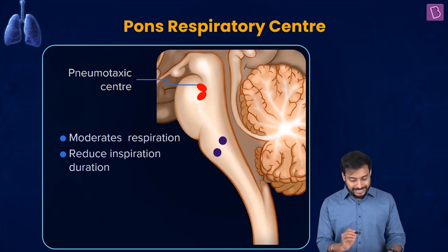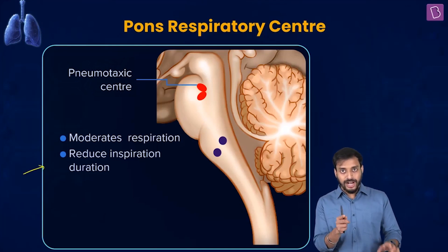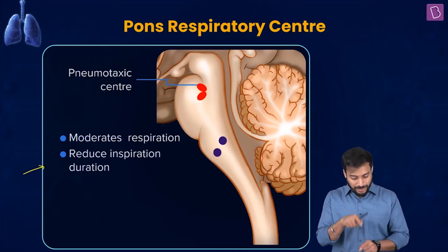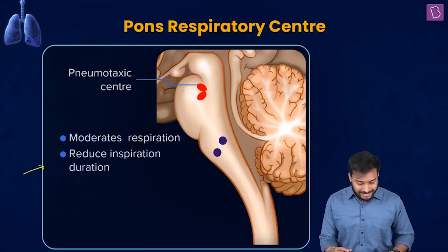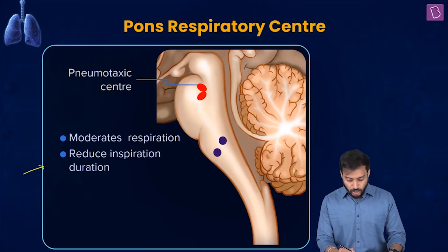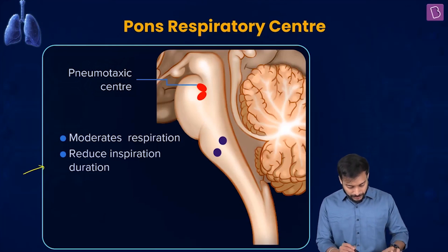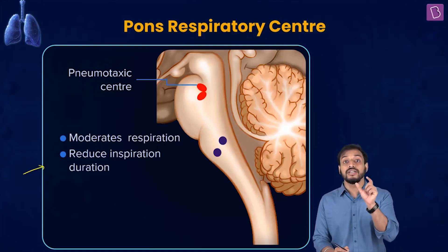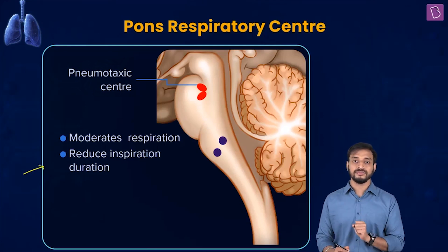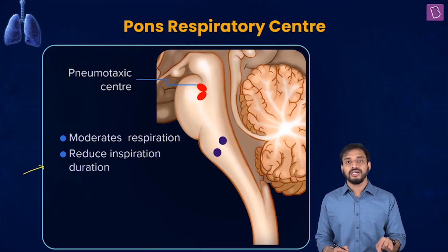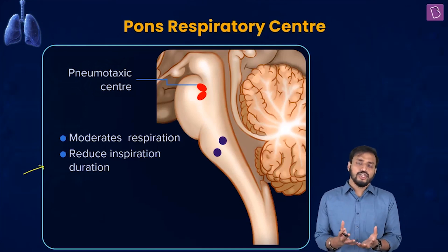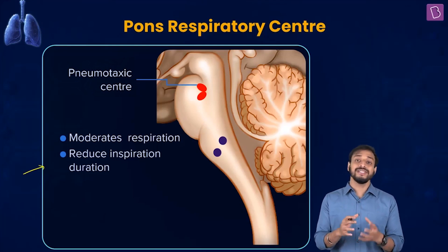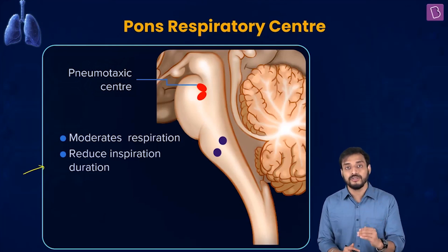The pneumotaxic center reduces the inspiration rate. The apneustic center increases inspiration with long deep breaths, but the pneumotaxic center reduces the inspiration rate. Neural signals from the pneumotaxic center reduce the duration of respiration, so you don't take long deep breaths. By controlling the duration of respiration, it can also control the respiratory rate.